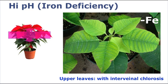Now let's shift to the opposite end of the pH spectrum — elevated values. Iron deficiency induced by high substrate pH values is common with poinsettias. Symptoms of iron deficiency are interveinal chlorosis, or yellowing between the veins, of the upper leaves.